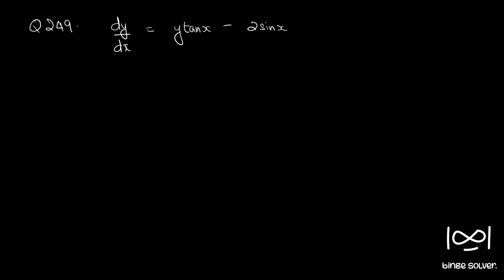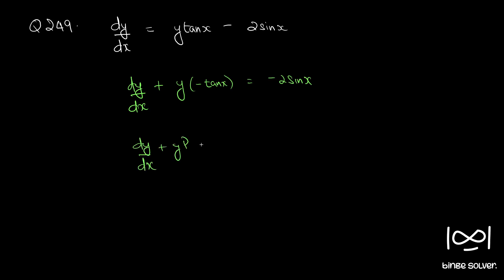Rearranging the given equation, we have dy by dx plus y into minus tan x is equal to minus 2 sin x. This is in the standard form of a linear differential equation, dy by dx plus y times P equals Q, where P and Q are functions of x alone or a constant. So here P is equal to minus tan x and Q is equal to minus 2 sin x.